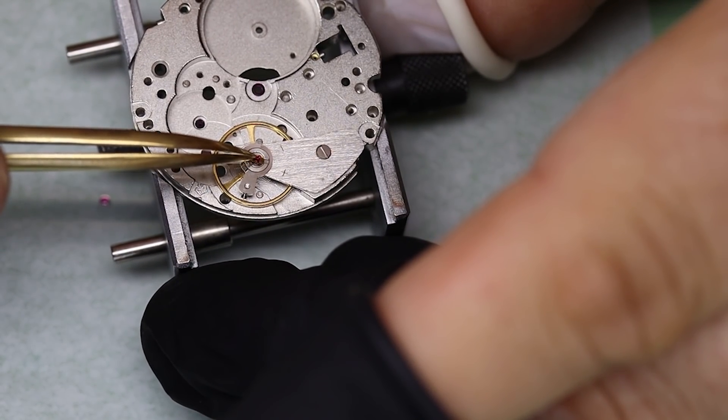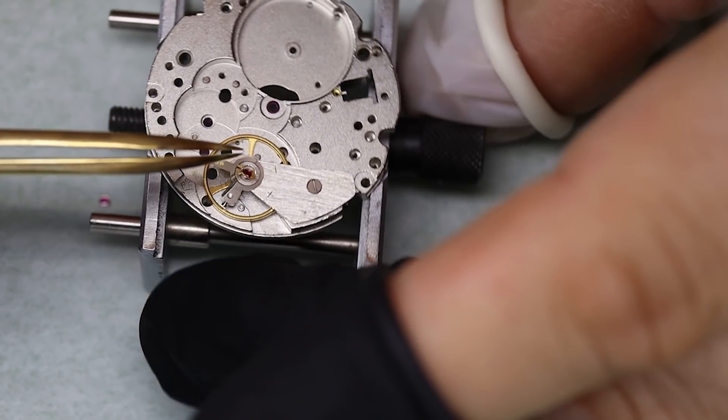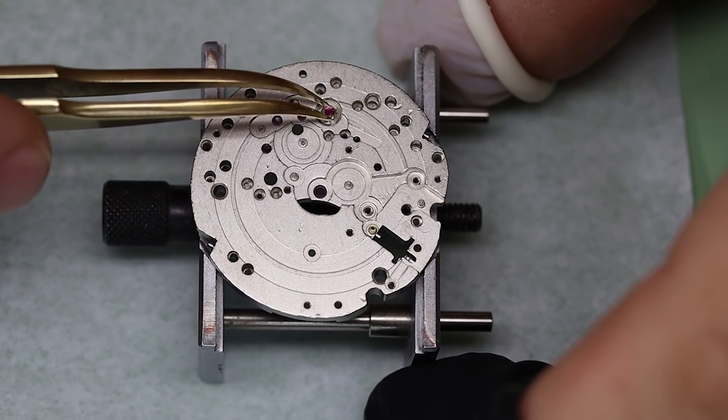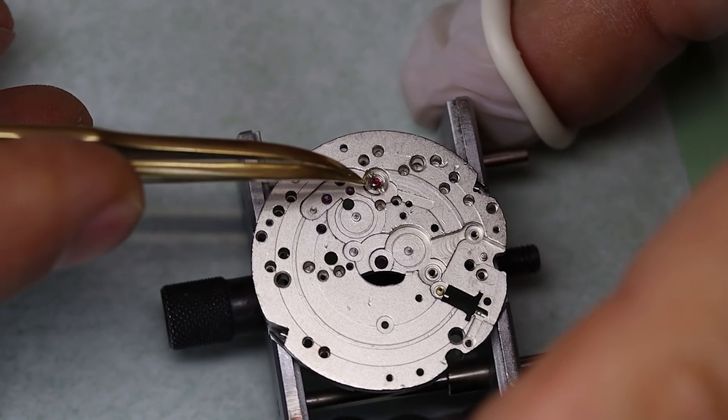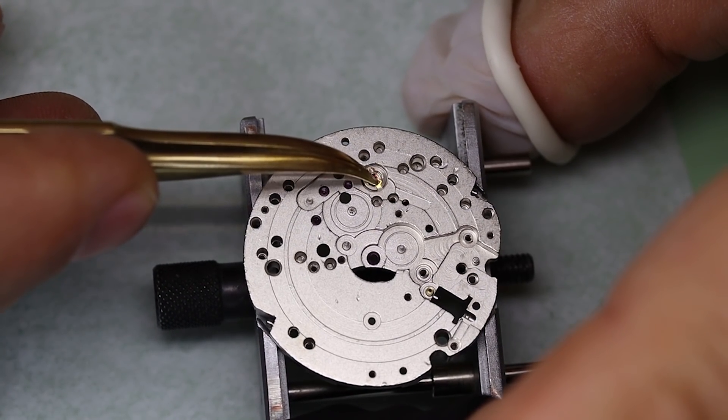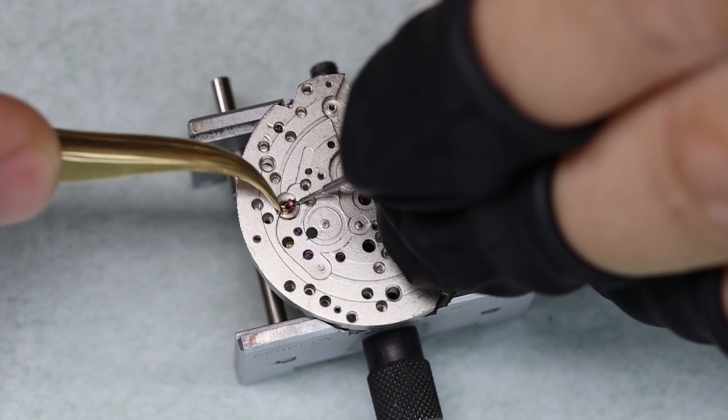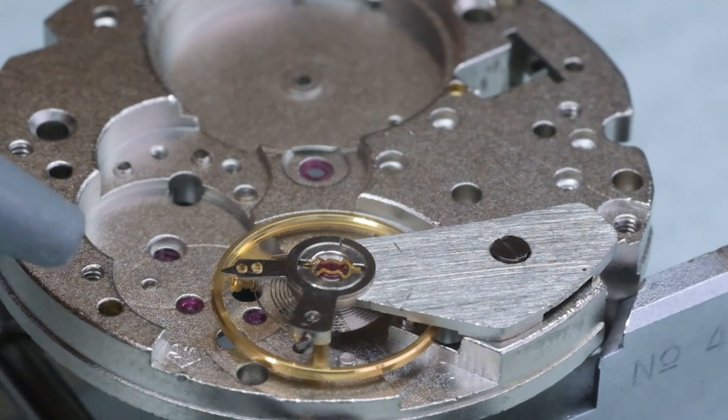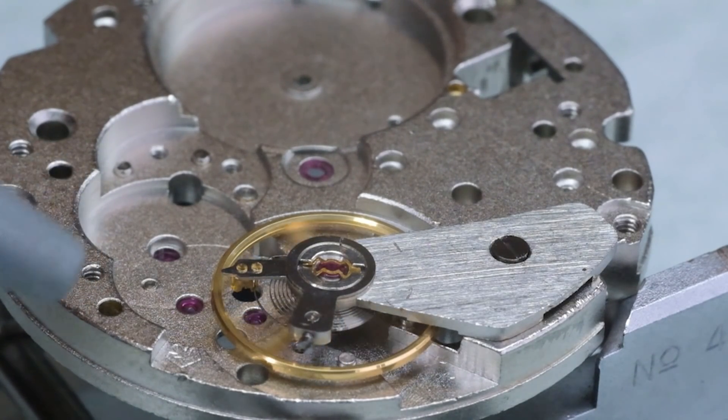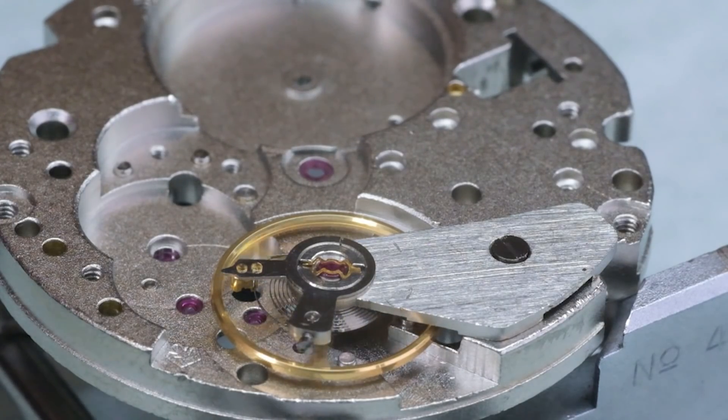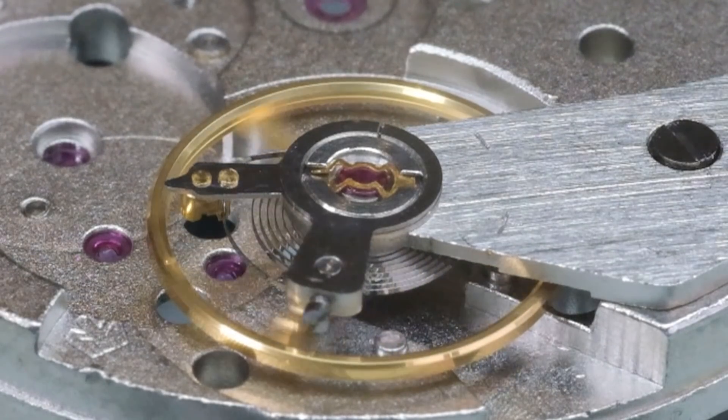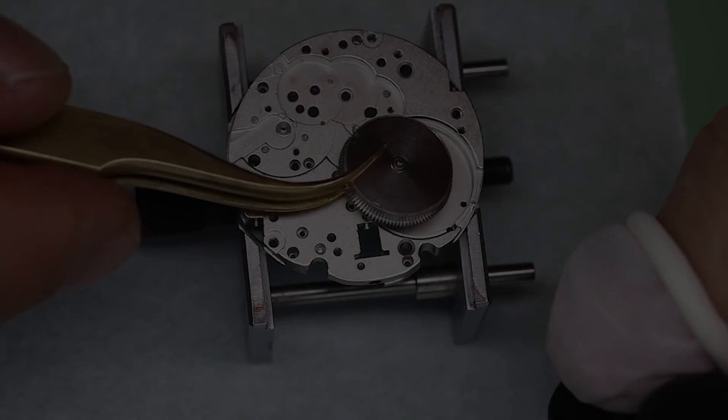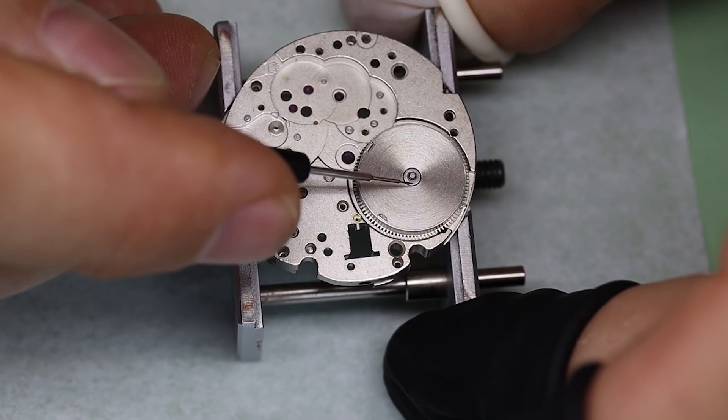And then we have to gently slide this very pingable little spring into the shock setting. If you have a microscope, that's the time for using it. Alternatively, you can use your knees to look for the spring on the floor. All right, let's see if this baby wants to rock. And that looks just fine, quite beautiful even.